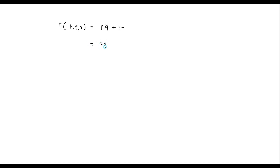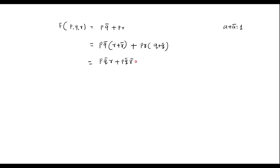I can write pq̄ with the missing variable r added as pq̄(r + r̄), because a + ā = 1, so r + r̄ = 1, which leaves pq̄ unchanged. Plus for pr, with q missing, I write pr(q + q̄). Expanding: pq̄r + pq̄r̄ + prq + prq̄.